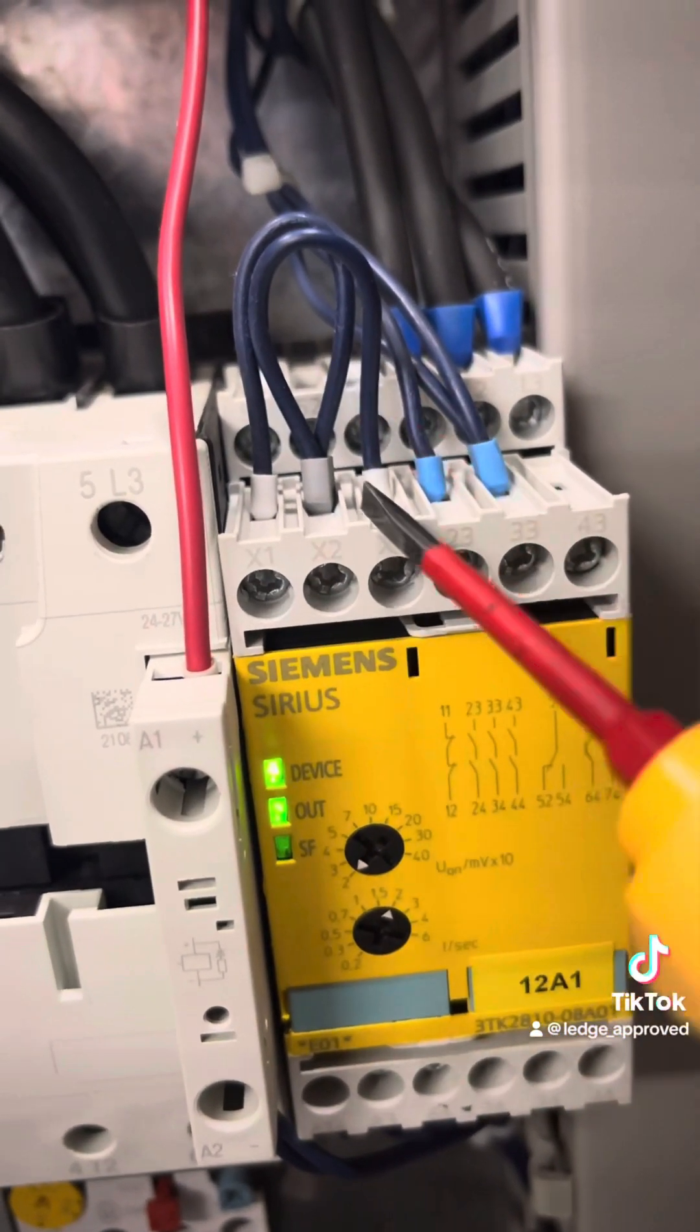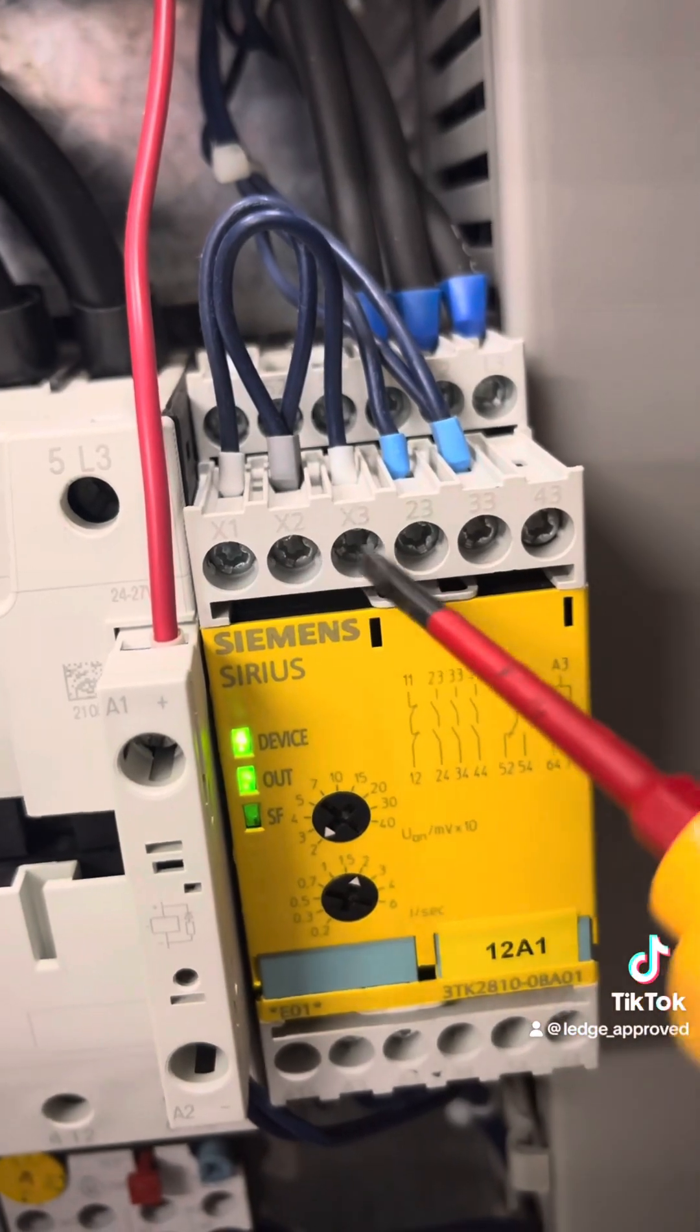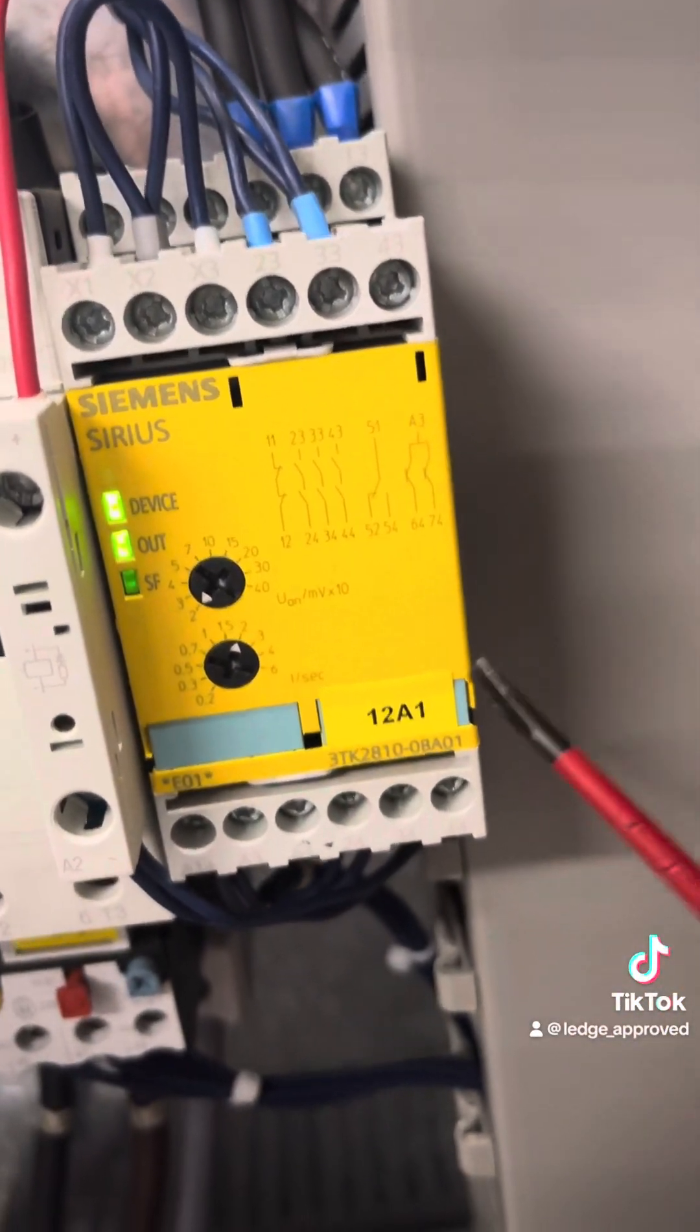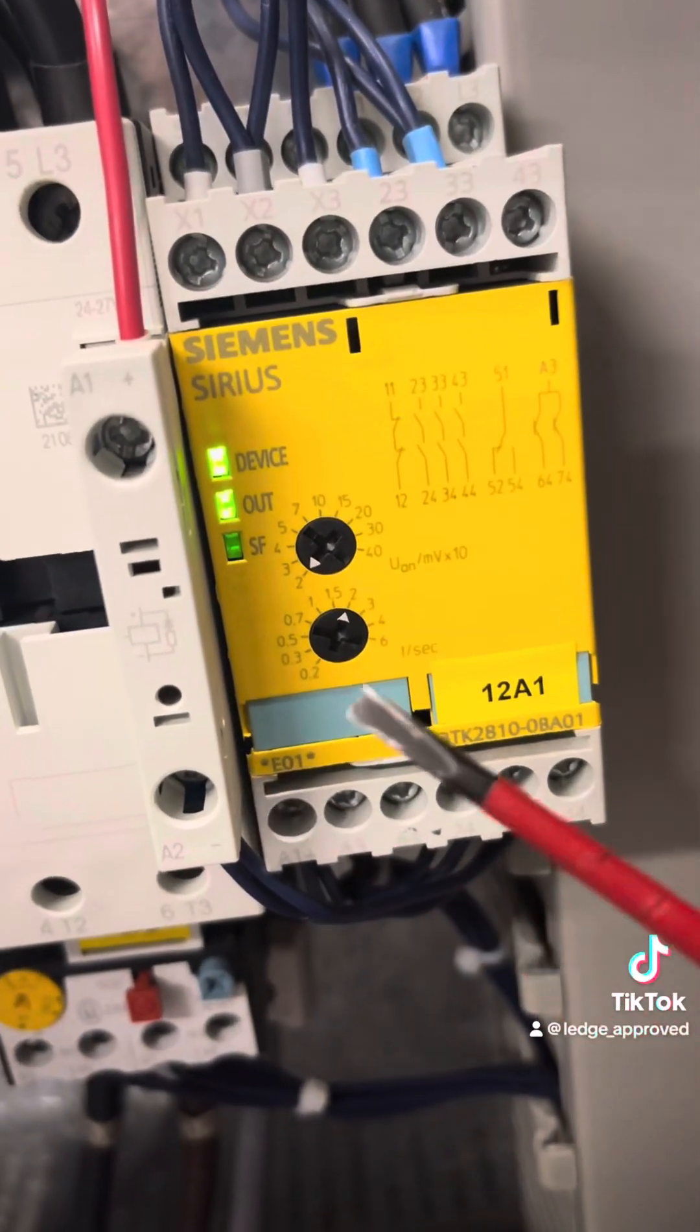You've got the X's there—X1, 2, and 3—they're like your reset button on your PLCs or any safety relay. When you link them out, that means it's an automatic reset.